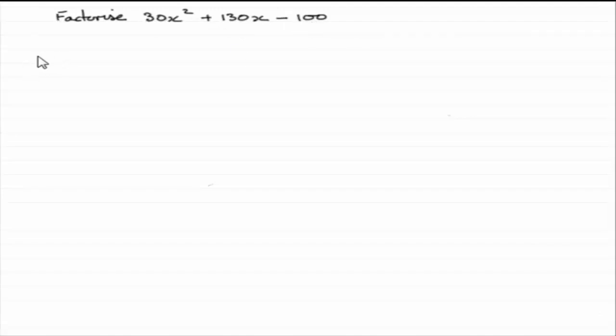So what I would start off then with is to write out the expression 30x squared plus 130x minus 100 and say that this is identical to 10 bracket, and then we need 3x squared inside here plus 13x minus 10. That will give us this. Now, is this fully factorised? Well, we've got a quadratic factor here, and this quadratic factor will in fact factorise again.